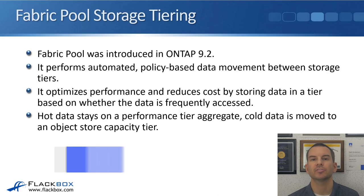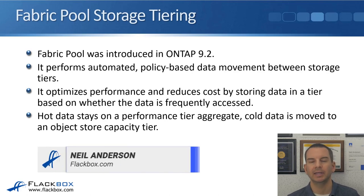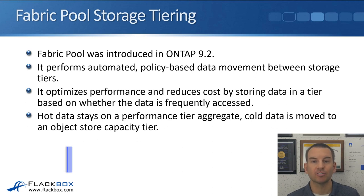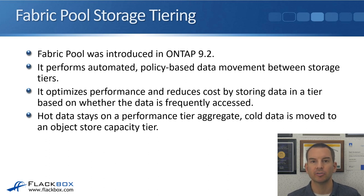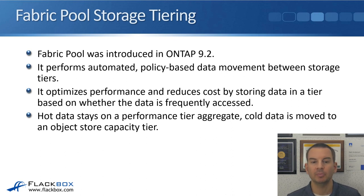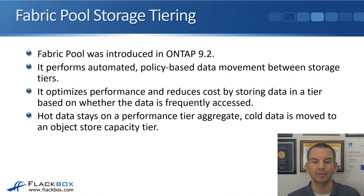Fabric Pool was first introduced in ONTAP version 9.2 and is a fully-fledged storage tiering technology that performs automated policy-based data movement between your storage tiers — your performance tier and your capacity tier. It optimizes performance and reduces cost by storing data in a tier based on whether the data is frequently accessed or not.